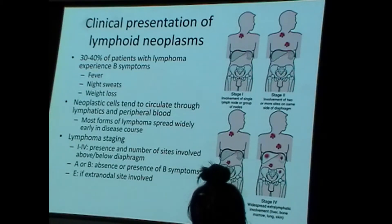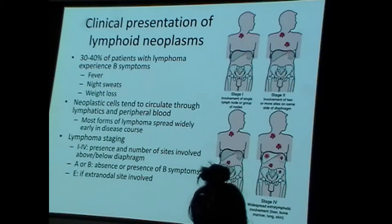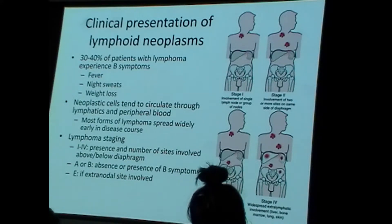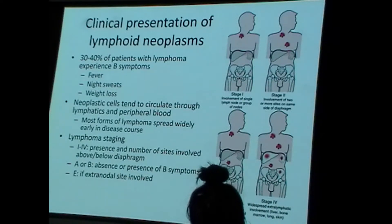How do lymphoid neoplasms typically present? Most individuals with lymphomas experience what are known as B symptoms — these include fever, night sweats, and unexplained weight loss over a six-month period or so. All malignancies can metastasize, and malignancies from the hematopoietic system are particularly prone to metastasize because they have access to circulatory systems. Lymphomas frequently spread out and spill into the peripheral blood early in the disease course.